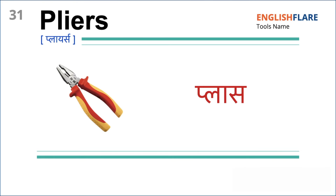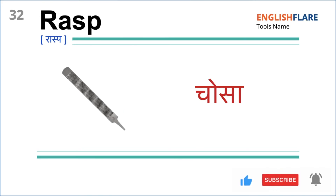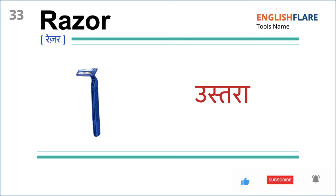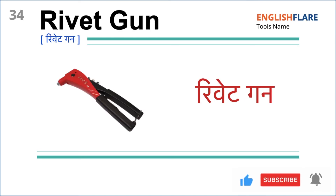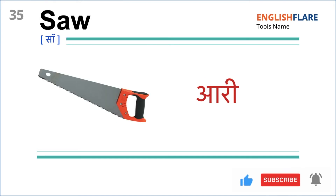Pliers — Plus. Rasp — Chosa. Razor — Ustara. Rivet Gun. Saw — Aari.